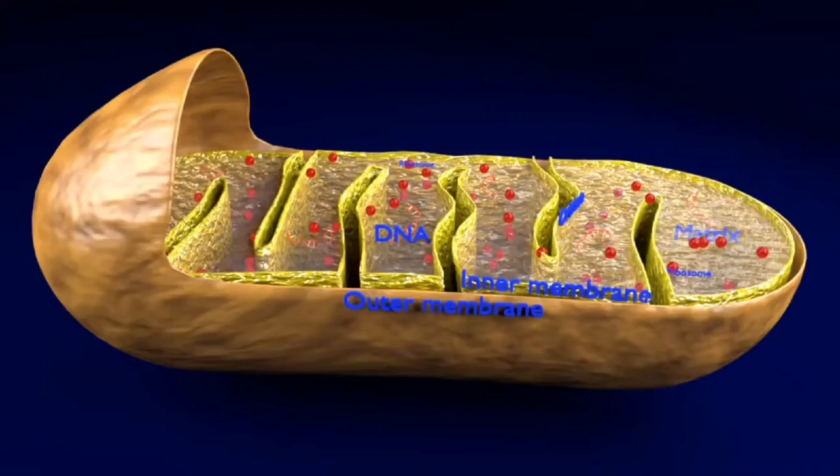Mitochondria is known as the powerhouse of the cell. It generates most of the chemical energy needed to power the cell's biochemical reactions. Chemical energy produced by the mitochondria is stored in a small molecule called adenosine triphosphate, also called ATP.